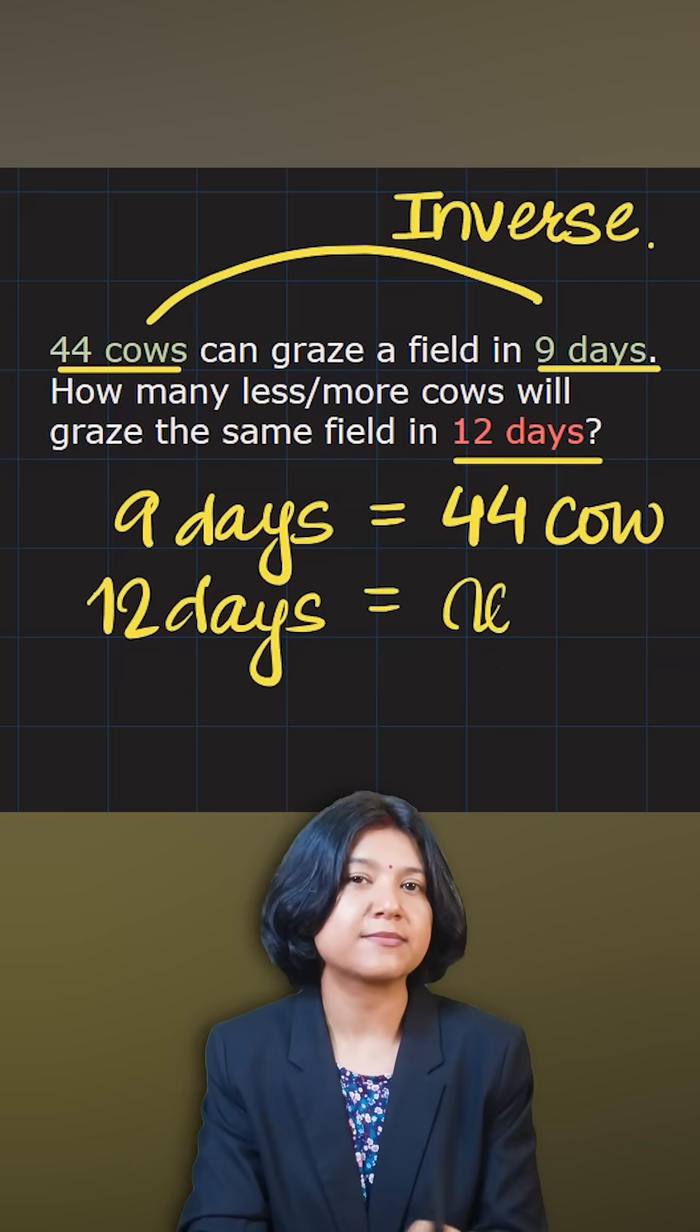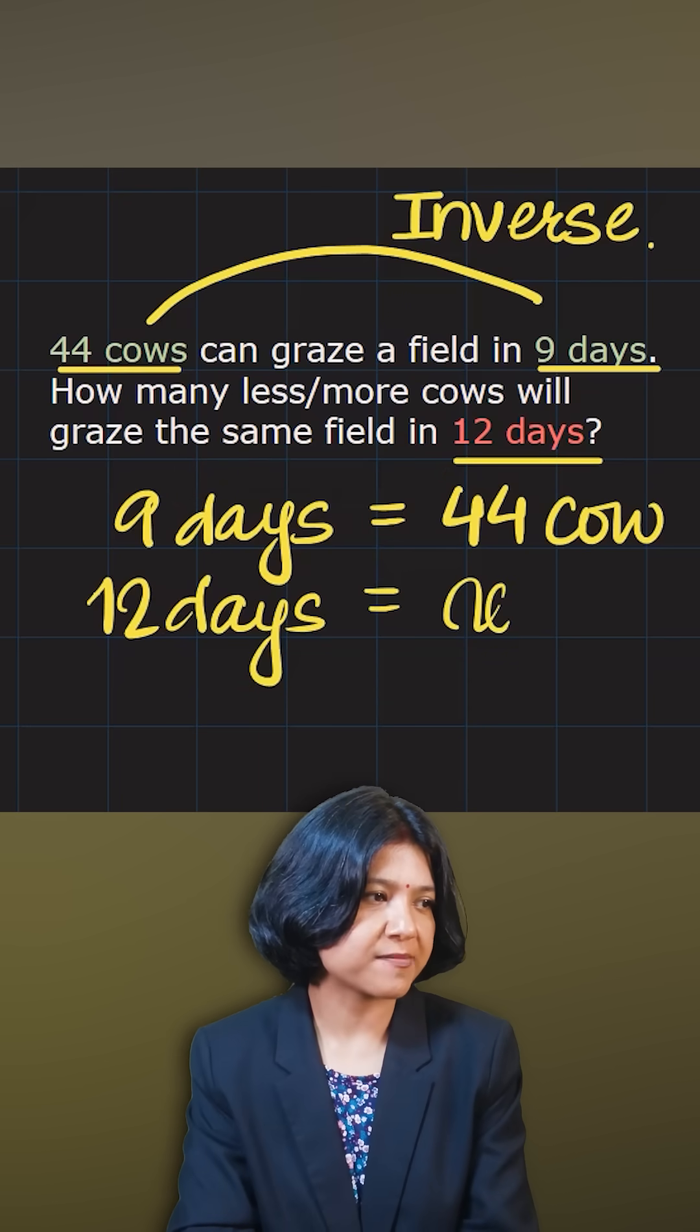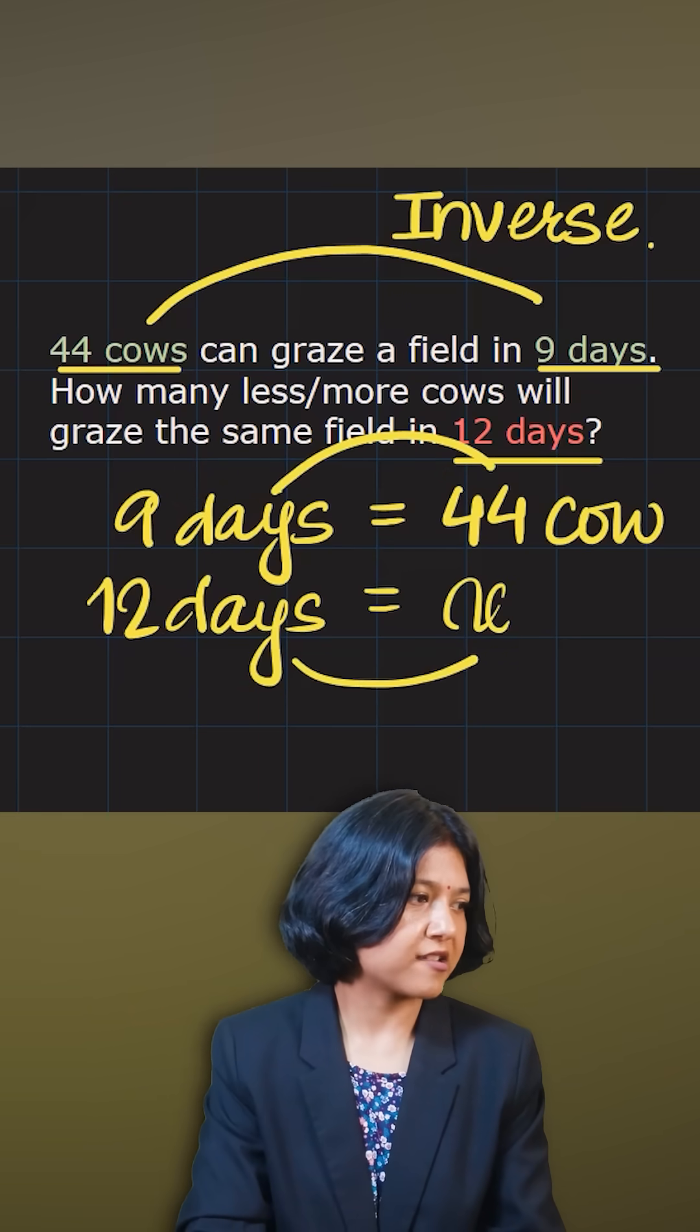Here we don't cross multiply. We cross multiply in direct variation or direct proportion. When it is inverse proportion, you just multiply straight. So the concept is very simple.